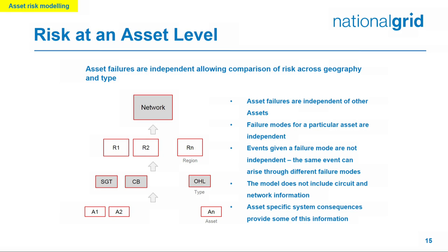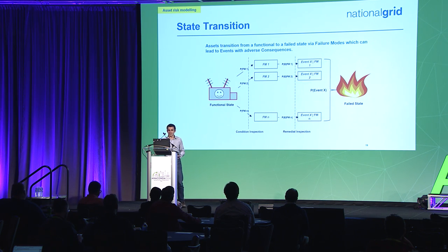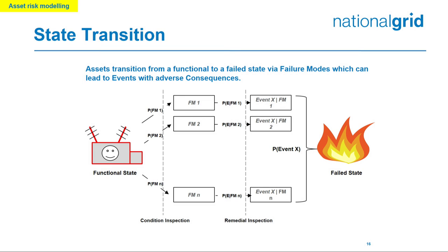So briefly, I'll talk about our risk framework — submitted and approved by our regulator last year, currently being implemented using Python, NumPy, and Pandas. Asset failures are independent of each other. A failure mode — something that can go wrong with an asset — is treated as independent. An event, which is a consequence of a failure mode, can arise through different failure modes. The model doesn't include circuit or network information; you've got assets at the bottom, you can bring that up to regions, then sum to get the network. An asset can move from a functional state through to a failed state by calculating the probabilities all the way through.